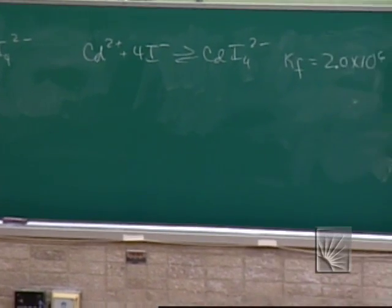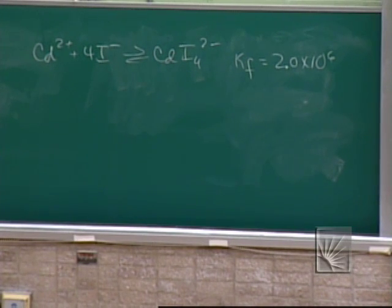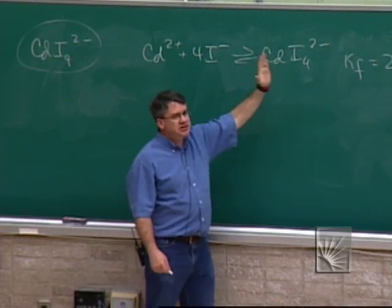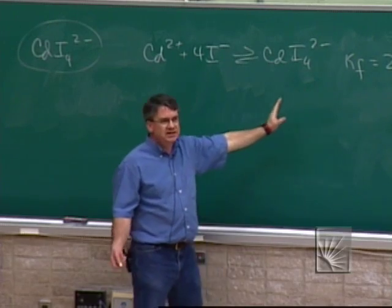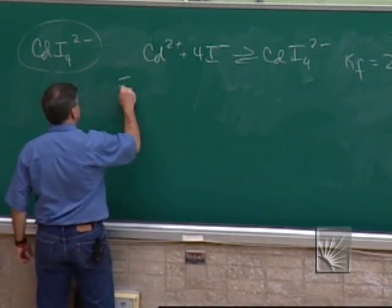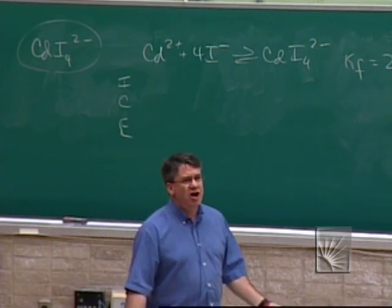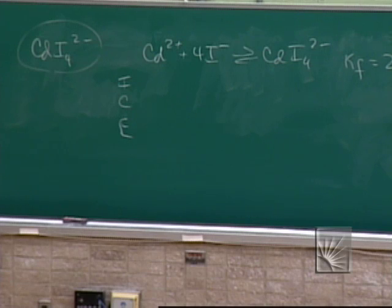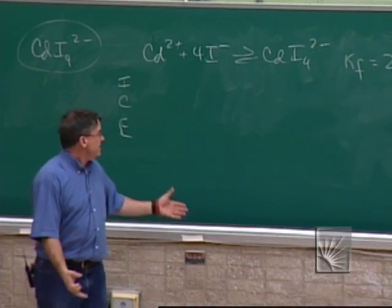KF is the formation constant of a complex ion. For example, tetraiodocadmium 2− ion: KF = 2.0 × 10^6. The reaction is the one to form this ion. It's just an equilibrium — you solve it the same way: initial concentrations, the change that occurs, equilibrium concentrations, plug it in. But solving it becomes a challenge because we can't use the math trick of ignoring x. Why? Look at the value of K — it's very large.